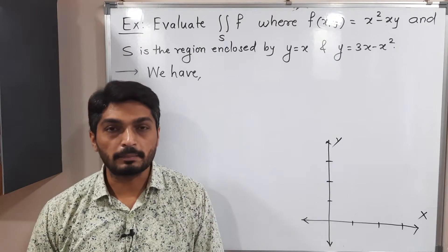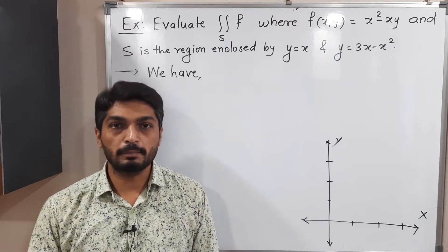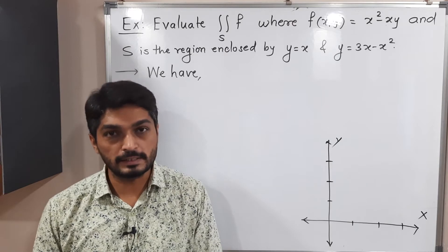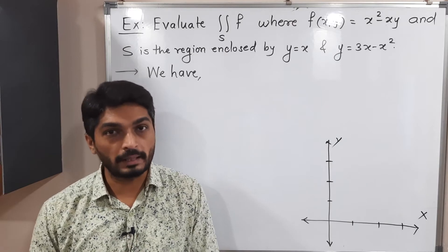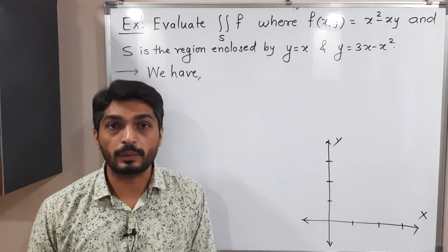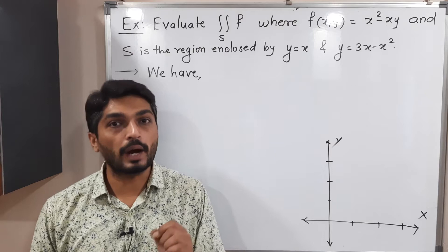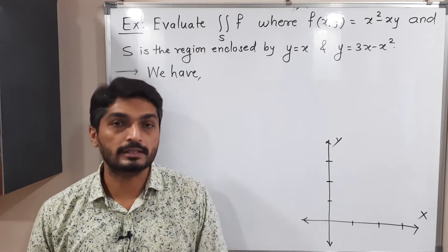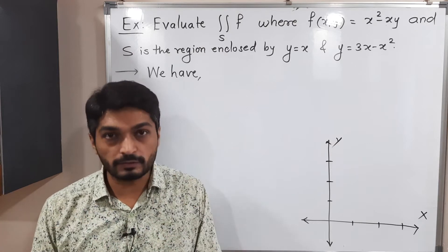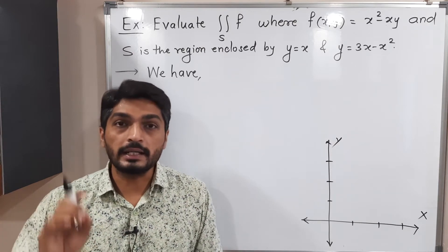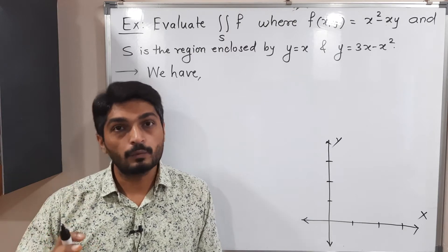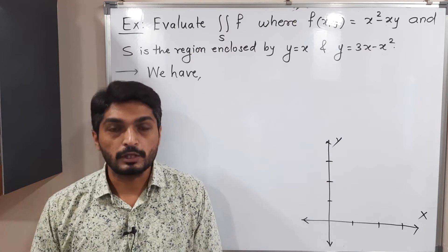Let us discuss this example. We have to find the value of double integration where the region is bounded by the parabola y = 3x - x² and the line y = x. What we do is: we draw the diagram first, find the region of integration, get the limits, and then solve the double integration.